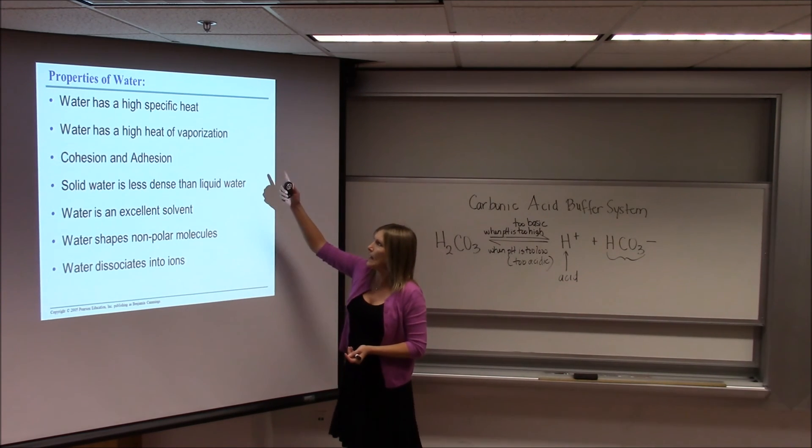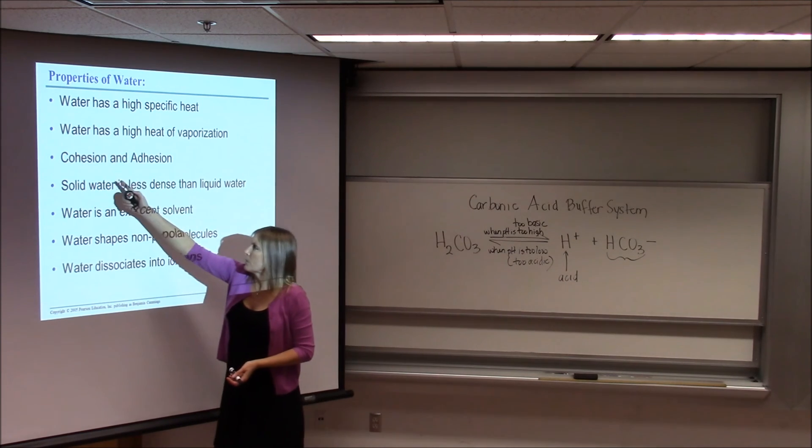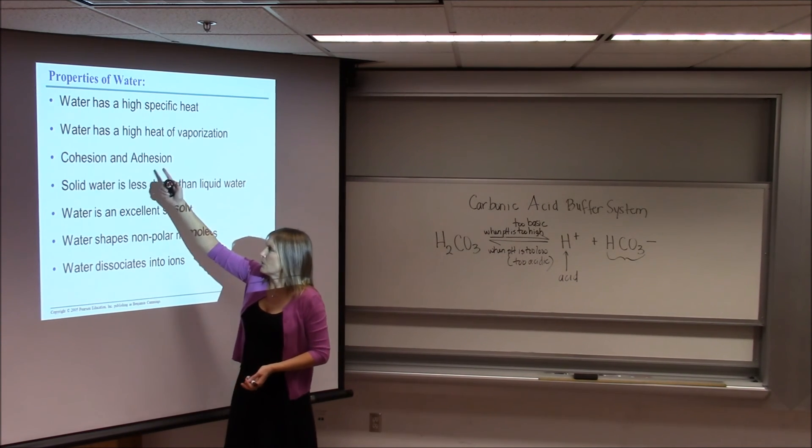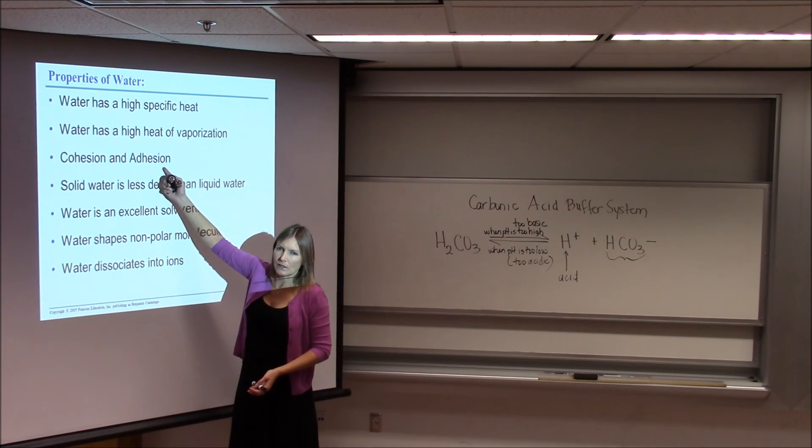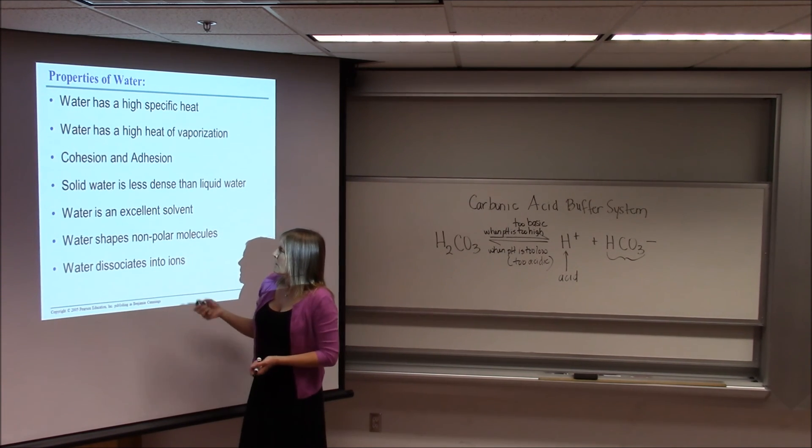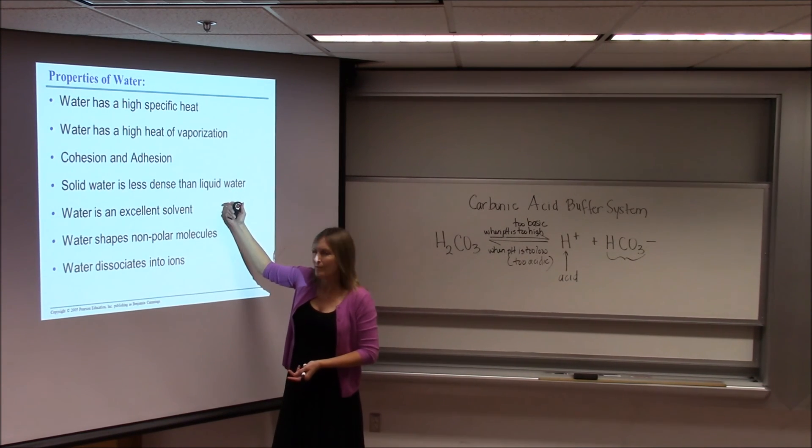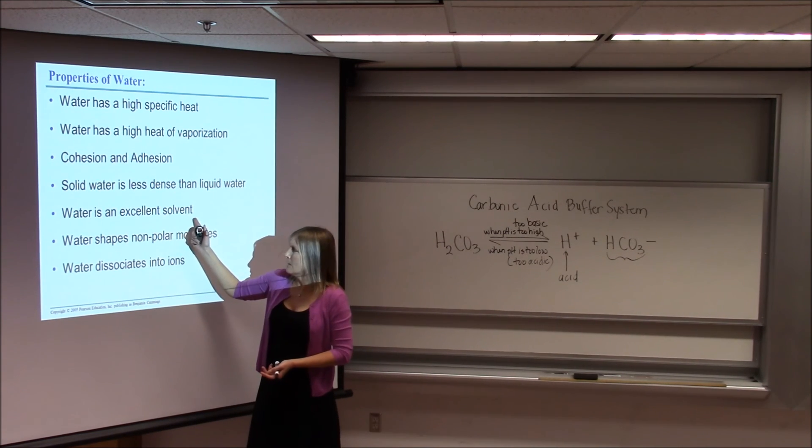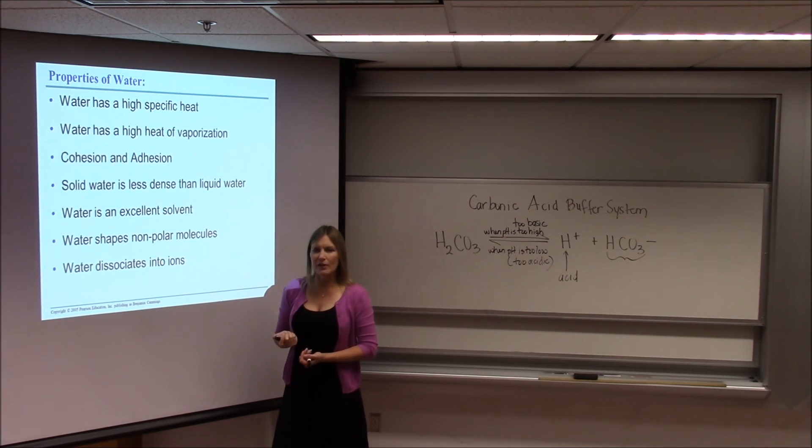Remember that water has a high specific heat and a high heat of vaporization. This is how water is going to moderate temperature change. Water has these two important properties, cohesion and adhesion. Water molecules stick to each other via hydrogen bonds and stick to other molecules and surfaces via hydrogen bonds. That's how we can pull water up a tube. That's how fluids can move through living systems. Solid water is less dense than liquid water. In other words, ice floats. Water is an excellent solvent, meaning solutes dissolve readily in water.